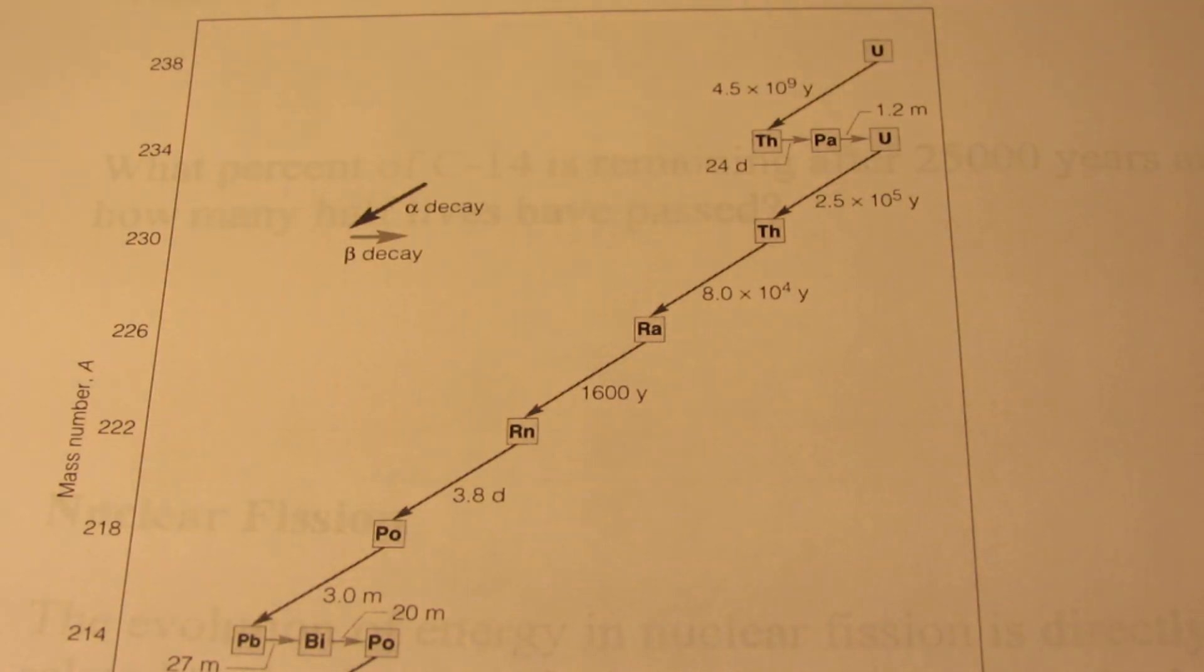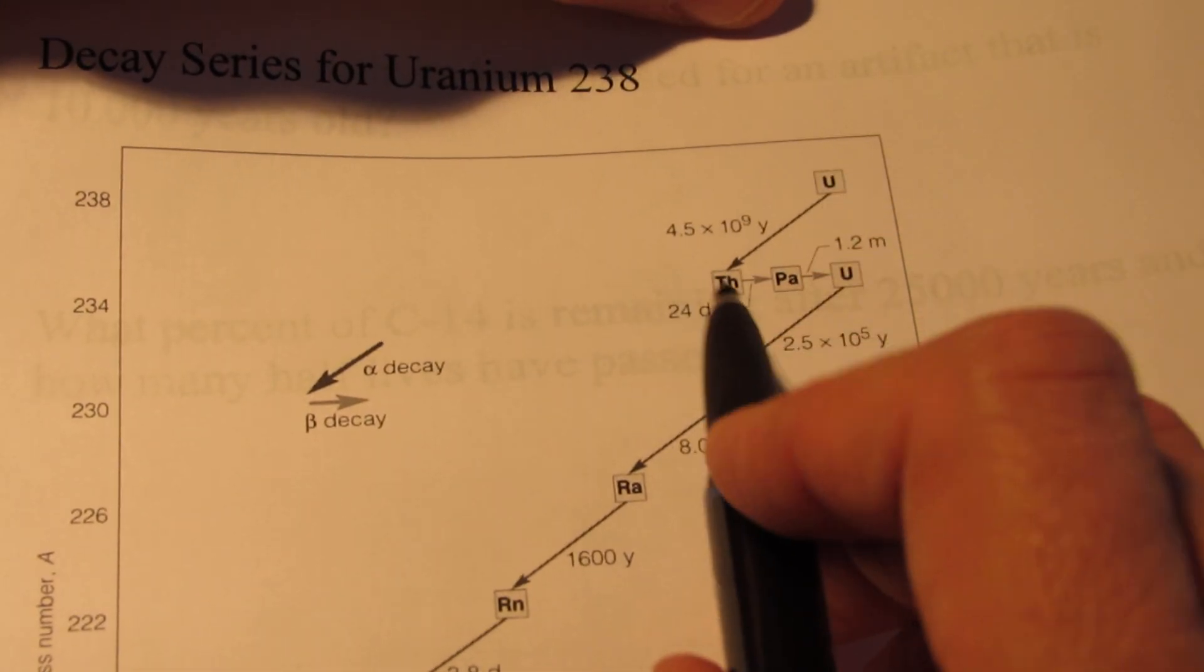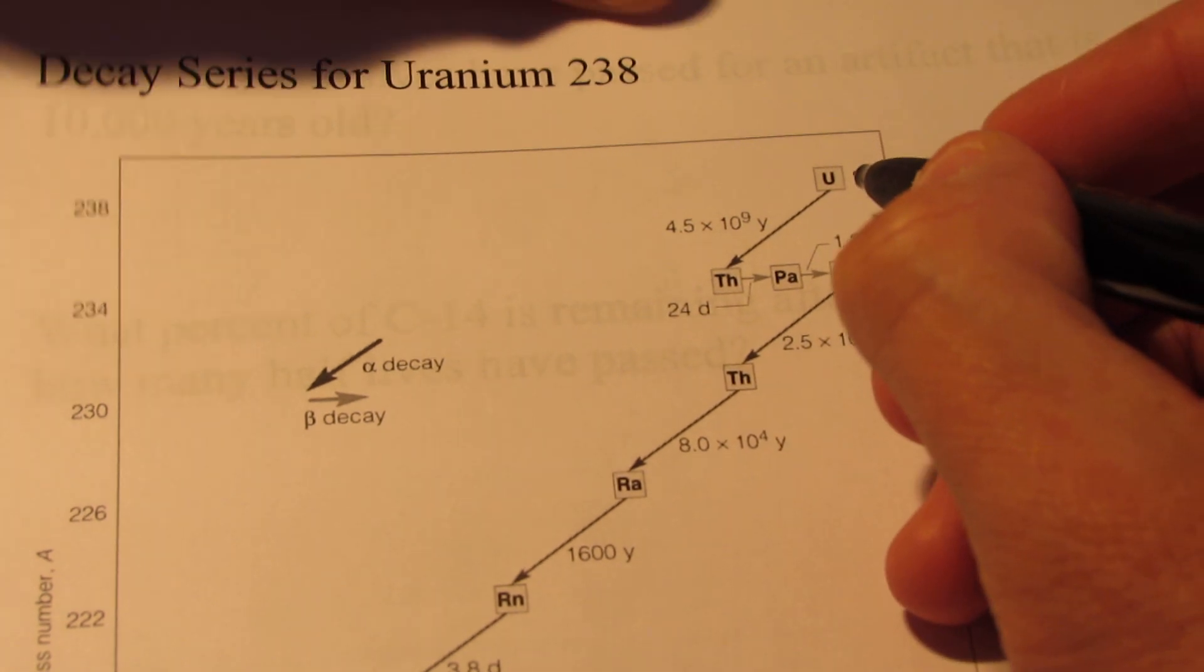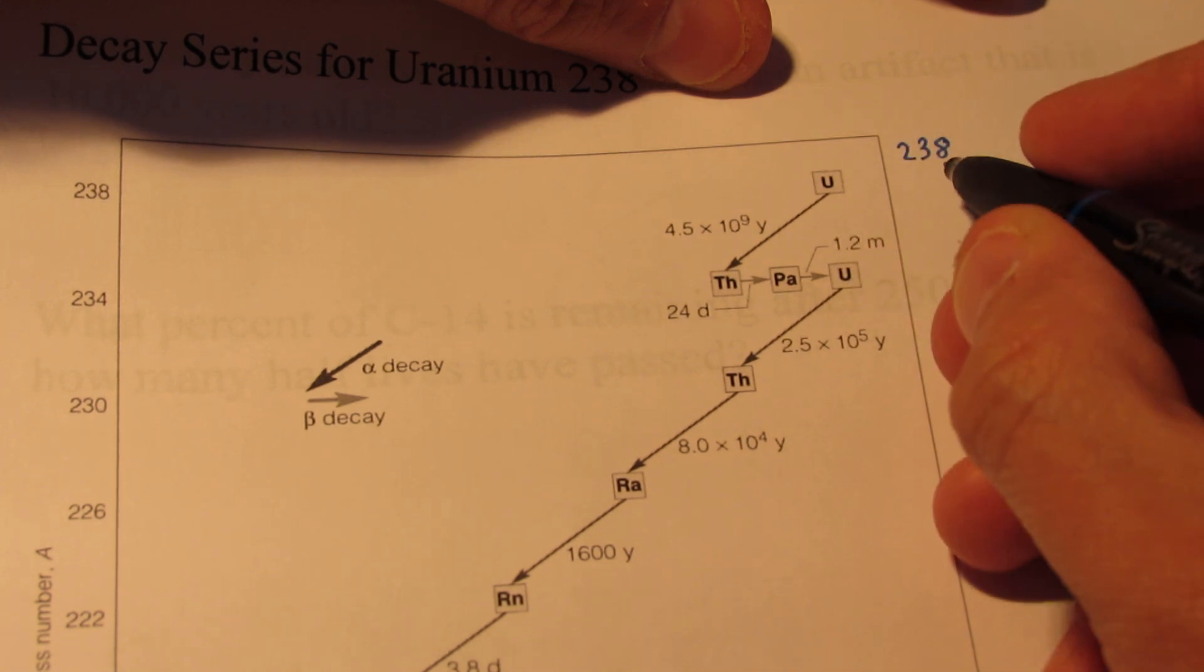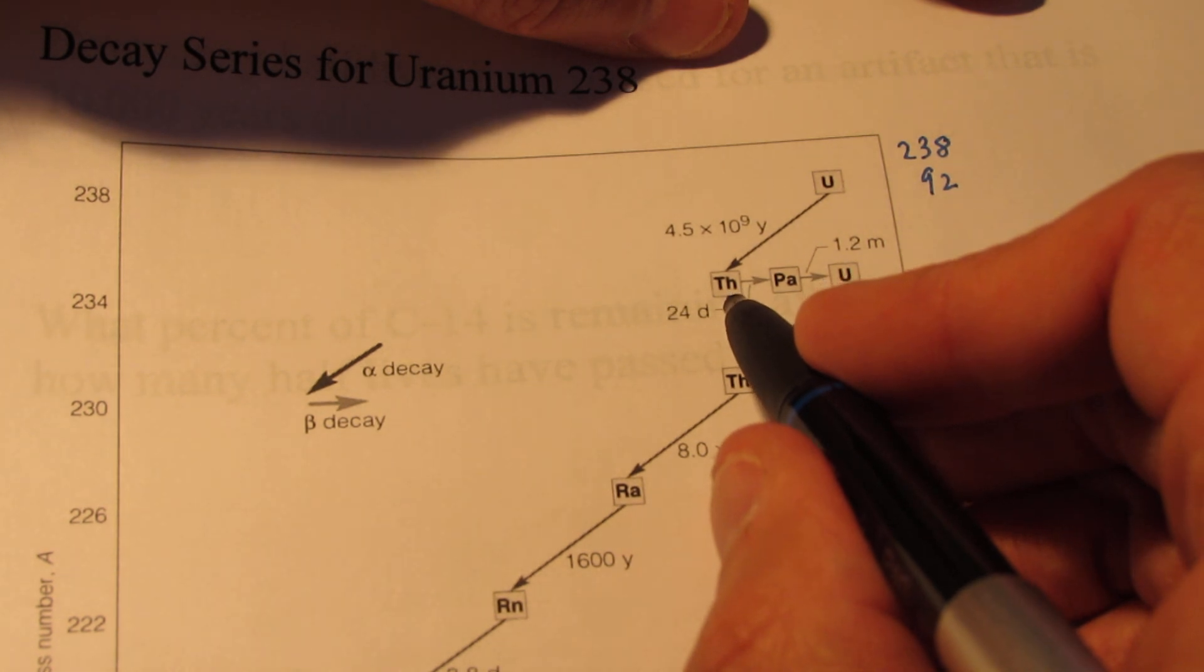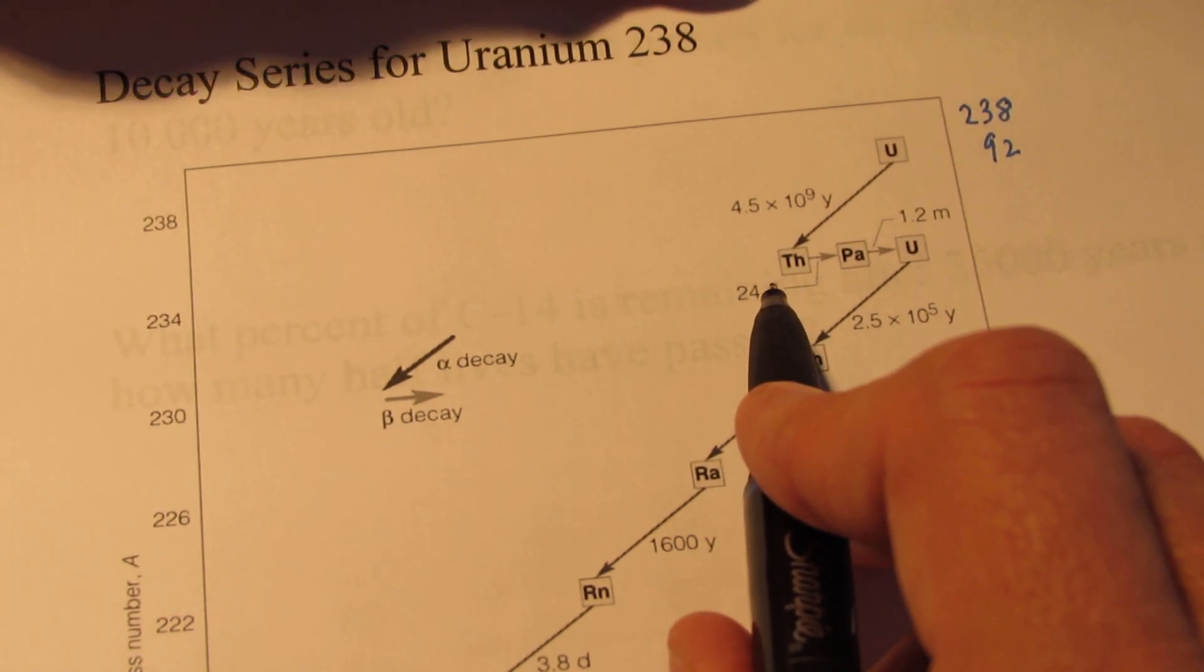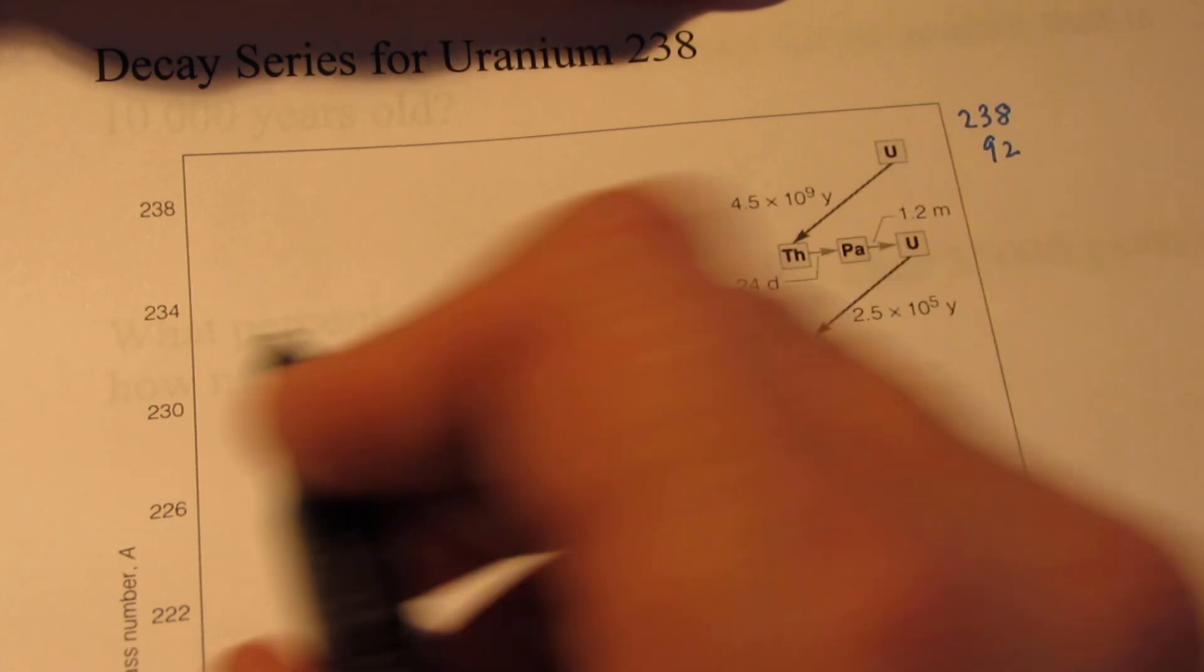Now let's take a look at the decay series of uranium-238. Uranium-238 decays into thorium-234. For half of that to decay, it takes 4.5 billion years. Isn't that interesting? Uranium-238 has 238 as a mass number with an atomic number of 92. Thorium has a mass number of 234 with an atomic number of 90. So once again, we shot out an alpha particle, and it took 4.5 billion years for half of this sample to decay into thorium-234.